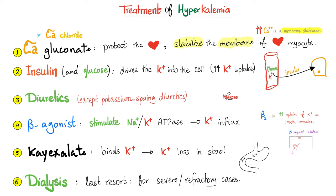How else can I treat hyperkalemia? Give insulin — to push potassium into the cell and lower potassium in the blood. But don't forget to give glucose with the insulin, because if you give insulin alone without glucose, the patient will develop hypoglycemia, which is not fun.